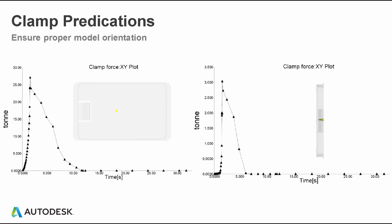Clamp force predictions come up a lot during training. First and foremost — Moldflow Insight 101 — you want to make sure your model is oriented in the proper Moldflow position. We want the mold open or sprue position, or die draw direction, to be in the positive Z direction. We want the XY plane to be the parting plane, because that's what we use for our clamp force calculations. If the model is not oriented properly, we're not assuming the correct projected area, and therefore clamp results will be incorrect.